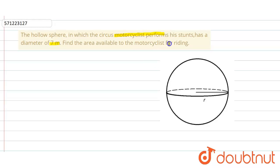So we just find out the surface area of the sphere. The radius is equals to half of the diameter, and the diameter is 7, so we get 7 by 2 meters as a radius. And we have to find the area available, so the area available for riding is equals to...